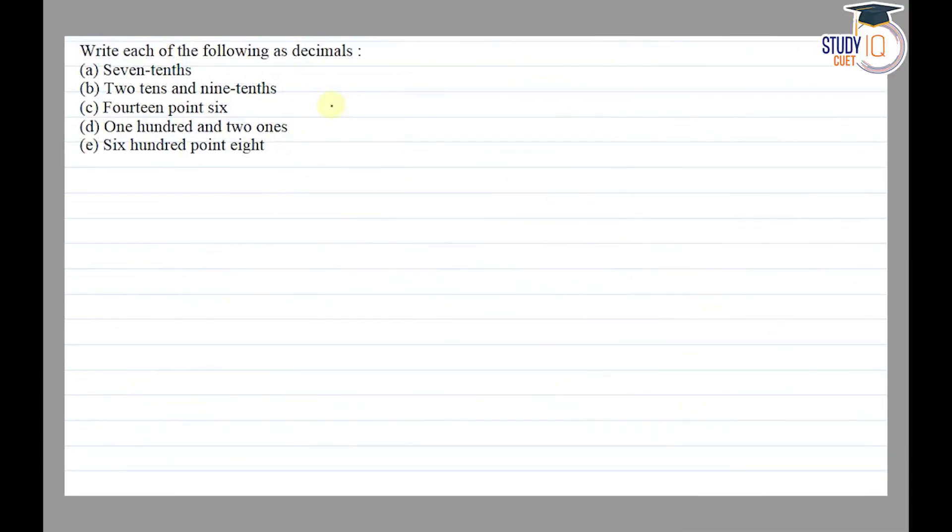Hello everyone. This question appears in Class 6 NCERT chapter of decimals. This is the third question of its exercise 8.1. The question says: write each of the following as decimals. Part (a) is seven-tenths, means 7 by 10.